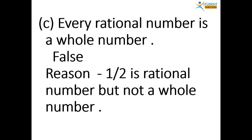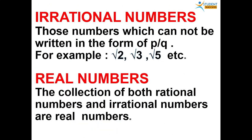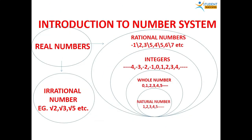So this is all about exercise 1.1. To recap what we have done in this session: we have classified the number system — natural numbers, whole numbers, integers, and rational numbers. To conclude, real numbers are the combination of irrational numbers and rational numbers.